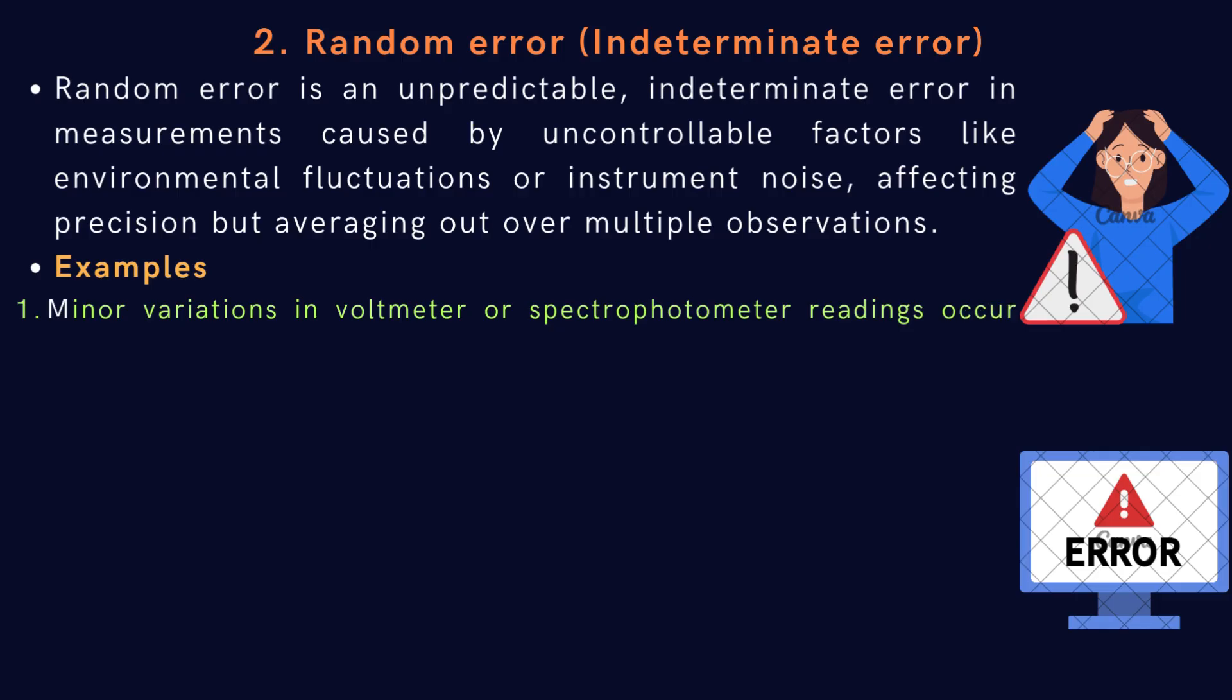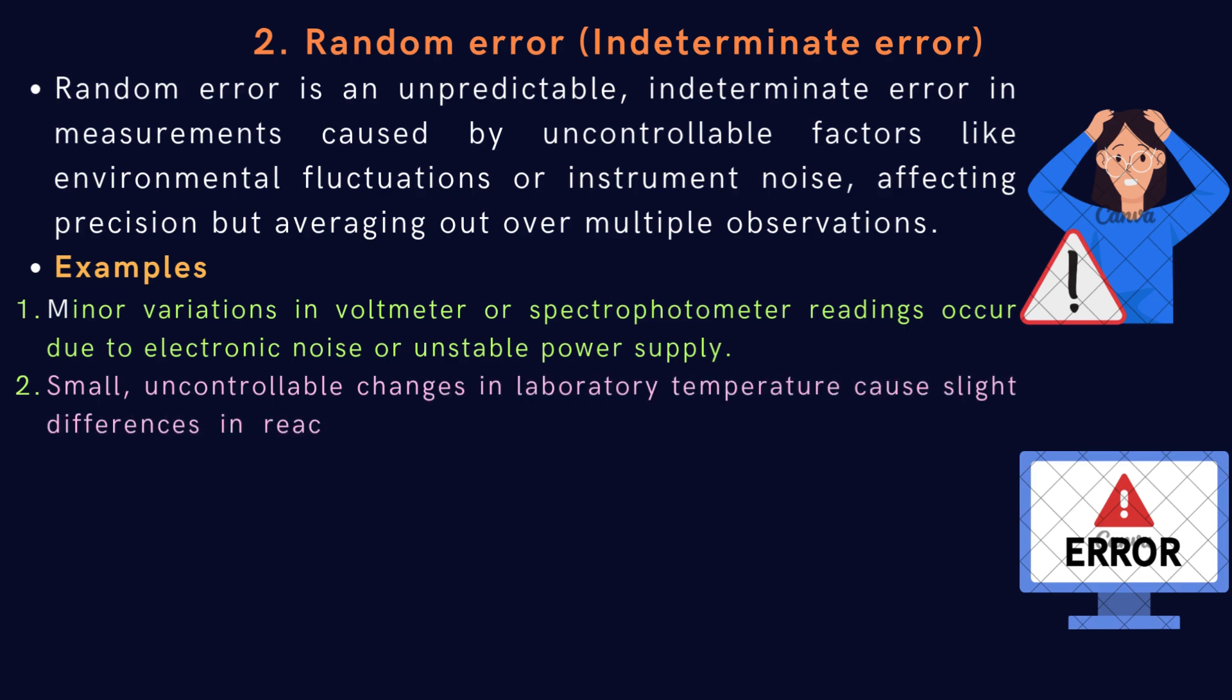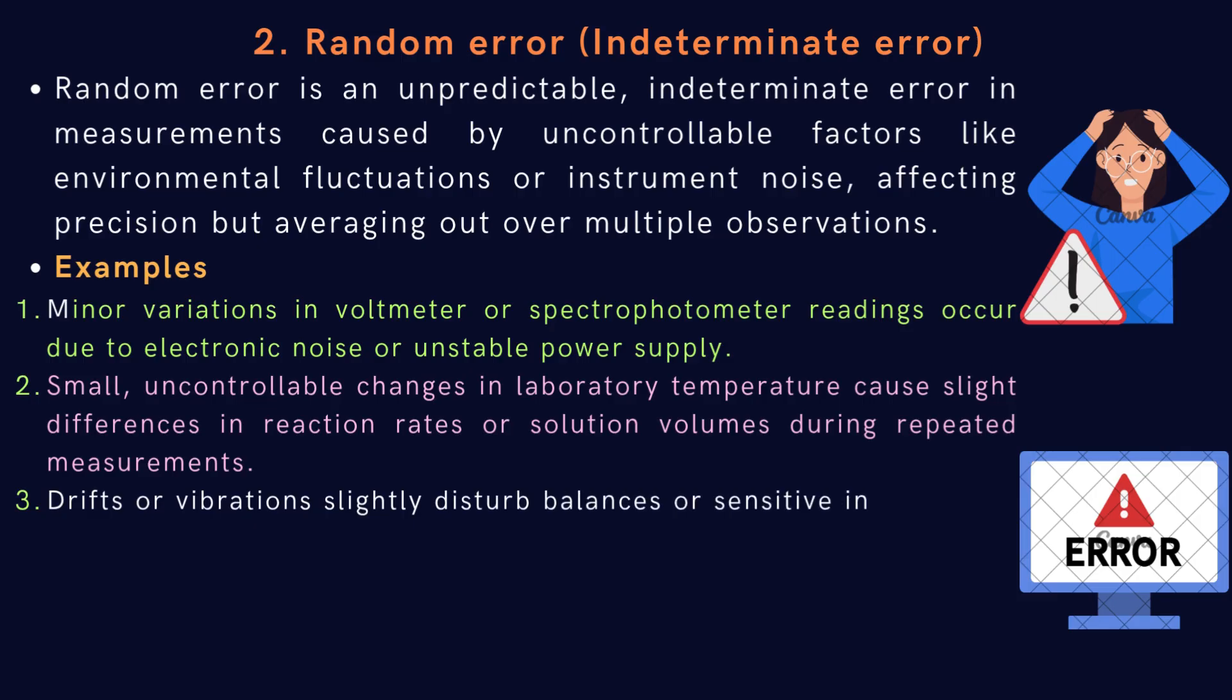Examples: minor variations in voltmeter or spectrophotometer readings occur due to electronic noise or unstable power supply. Small, uncontrollable changes in laboratory temperature cause slight differences in reaction rates or solution volumes during repeated measurements. Drifts or vibrations slightly disturb balances or sensitive instruments, causing small, irregular deviations in measured values.